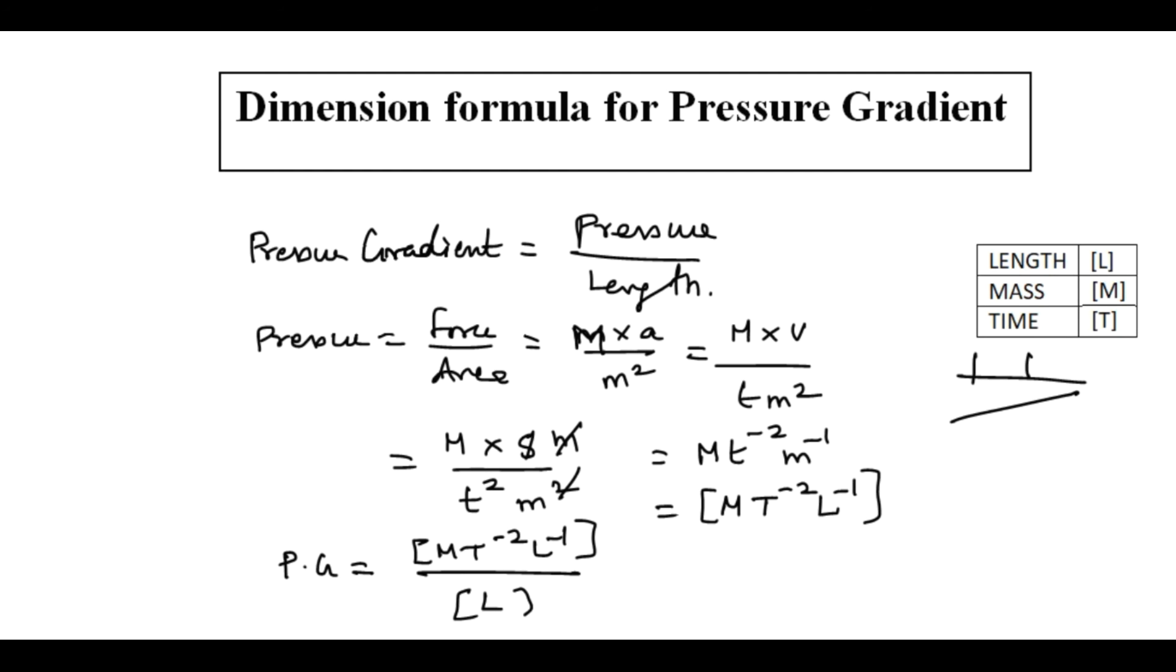If I substitute dimension formula l and bring it to the top, so m t power minus 2, l power minus 1, l power minus 1, that equals m t power minus 2, l power minus 2. This is the dimension formula for the pressure gradient.